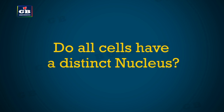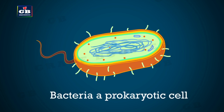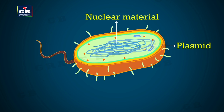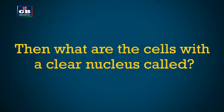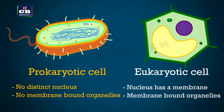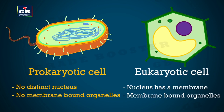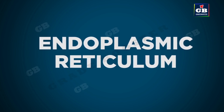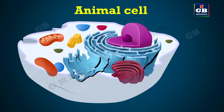Not all cells have a distinct nucleus. In certain single-celled organisms like bacteria, the nuclear membrane is absent; the nuclear region is undefined and contains only nucleic acids. This type of nucleus is called a nucleoid. Organisms whose cells lack a nuclear membrane are called prokaryotes — 'pro' meaning primitive or primary, 'karyon' meaning nucleus. Cells with a clear nucleus are called eukaryotic cells. In prokaryotes, membrane-bound organelles are also absent, whereas eukaryotic cells have a nuclear membrane and membrane-enclosed organelles. Prokaryotic organisms thus have poorly organized cell organelles compared to eukaryotic organisms.